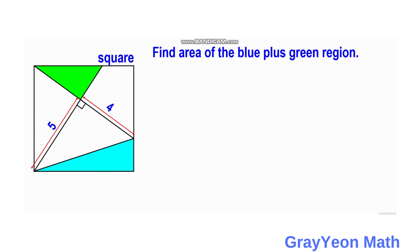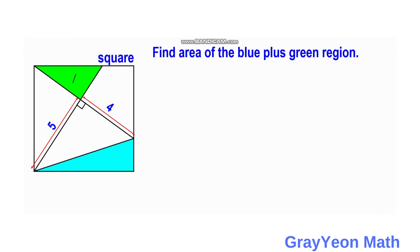The first thing we have to do is label the parts of the square. We label the green region as A, the next region as B, the right triangle in the middle as C, the next region as D, and the last region as E.